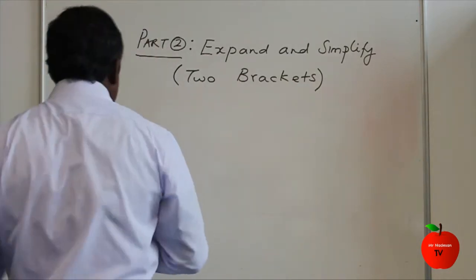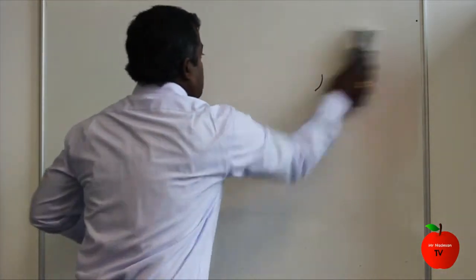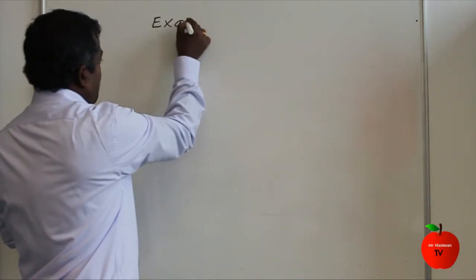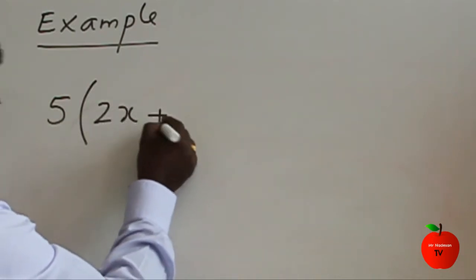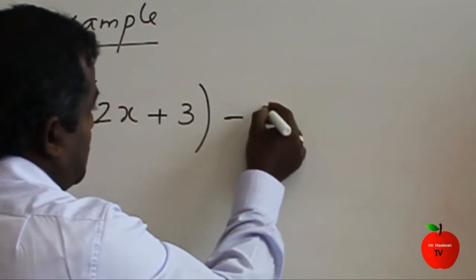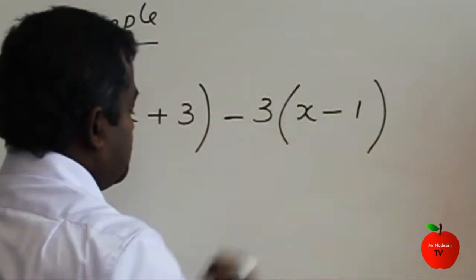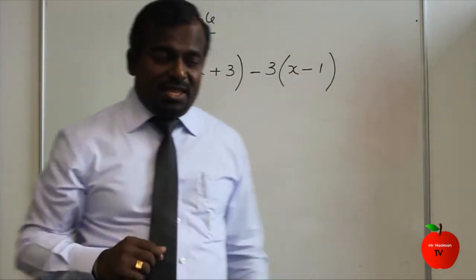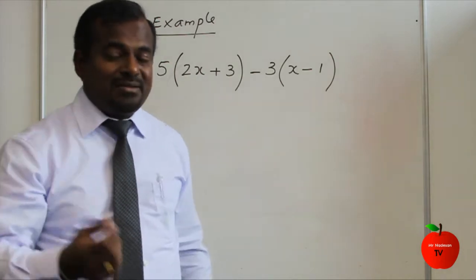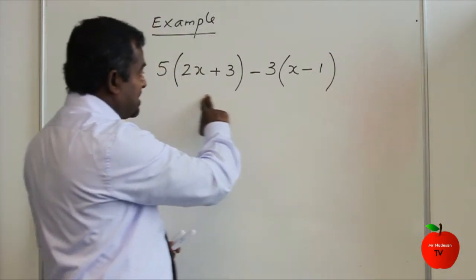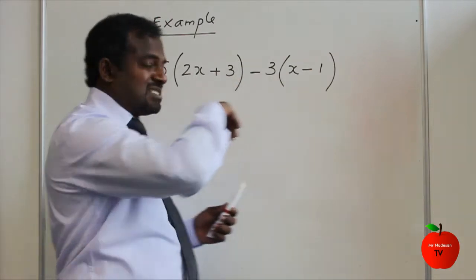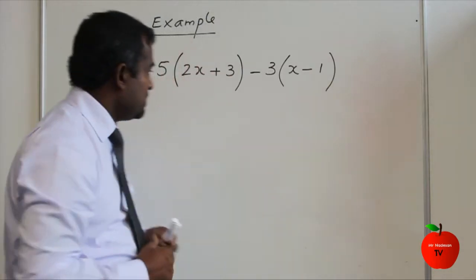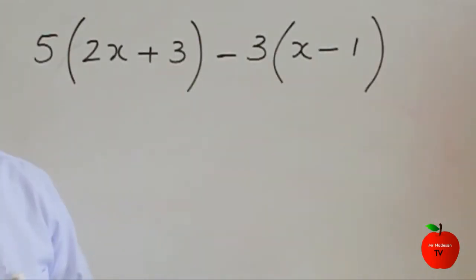We are looking at today part two: expand and simplify for two brackets, focusing on the C grade work. For example: 5(2x + 3) - 3(x - 1). In part one I explained how to expand single brackets. We have one single bracket here and another single bracket here. When we expand the two single brackets, then after we expand we will see how to simplify. Expand means multiply.